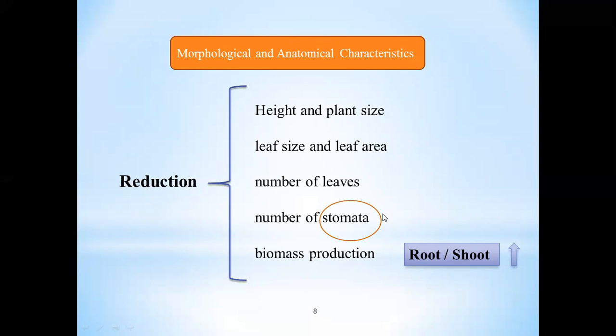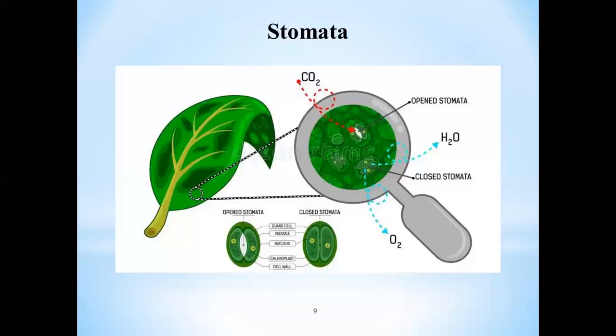Stomata are small pores in plant leaves that can be opened or closed to regulate gas. Stomata can completely be closed under severe drought stress, which is closely dependent on plant species. So tolerant species control the status of their stomata to allow carbon fixation and photosynthesis and improving water use efficiency. In the following, I will explain about photosynthesis also.